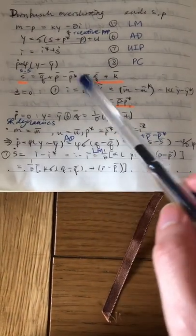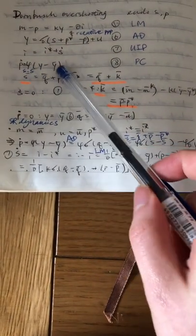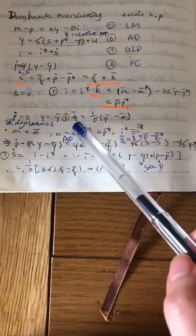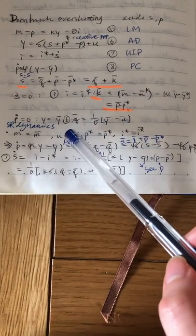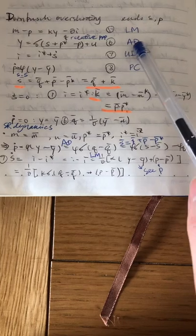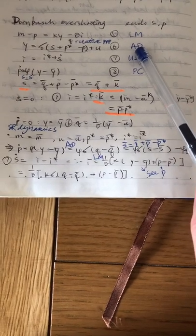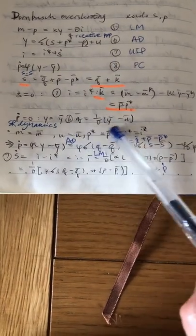And then if we assume P dot equal to zero, then Y equals to Y bar. And from the AD equation, we will see that Y bar is equal to this.